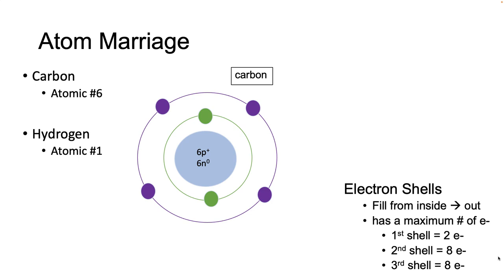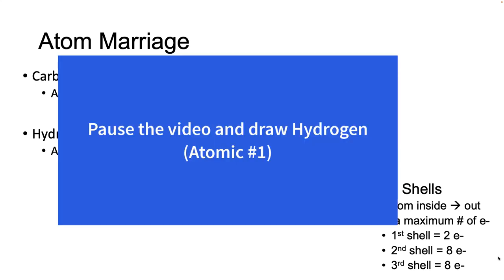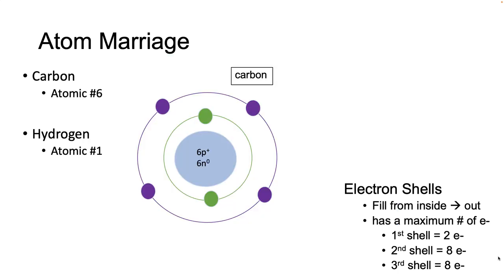When you're finished, come back and we'll continue. Okay, we're back. So we know that hydrogen is atomic number one, which means it has one proton. So we're going to give him one proton in the nucleus. We're going to draw the first shell, and we know that in a neutral atom, if it has one proton, it's going to have one electron. So we're going to give it one electron.